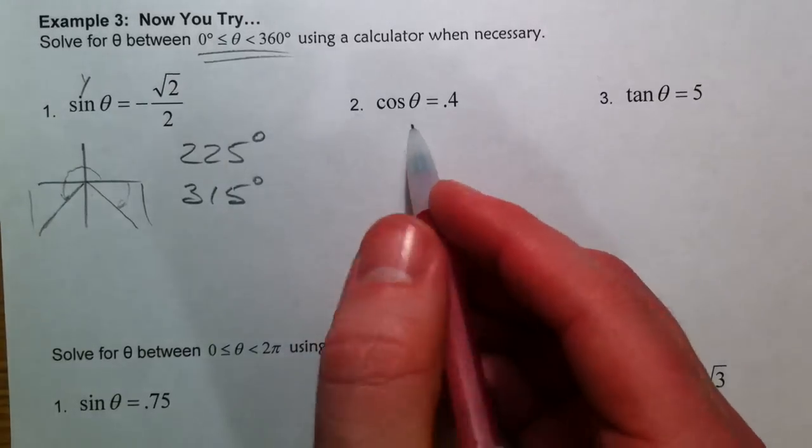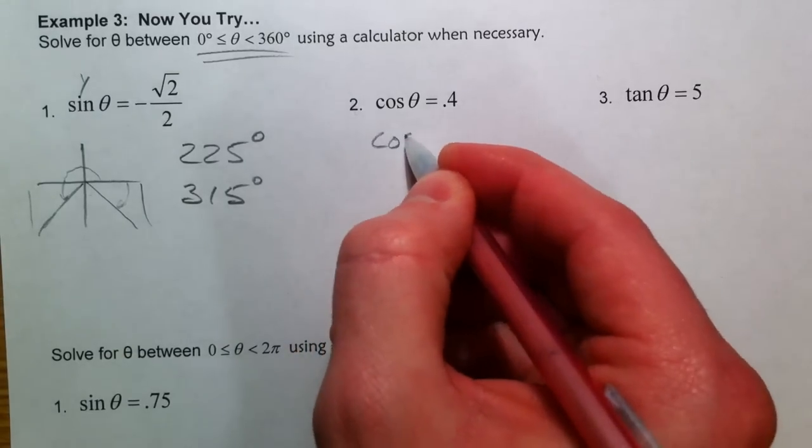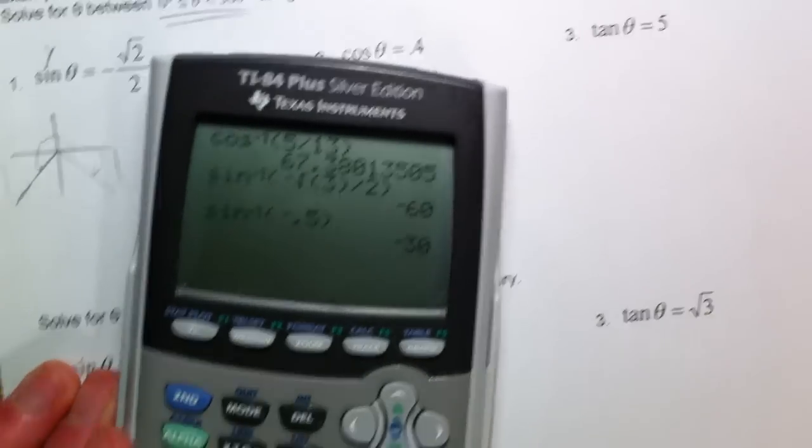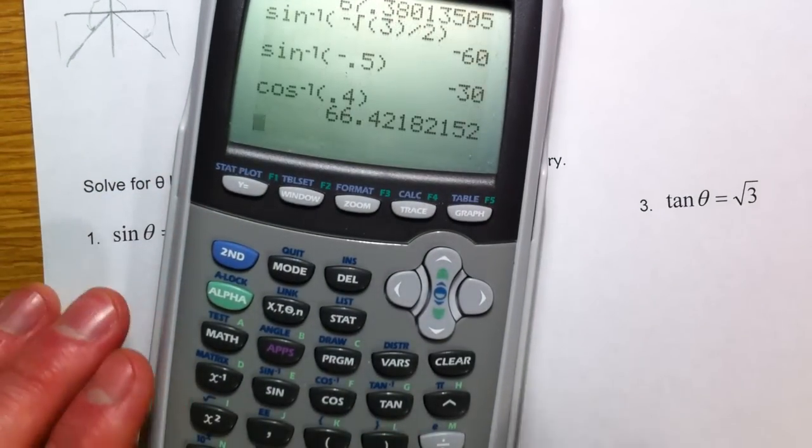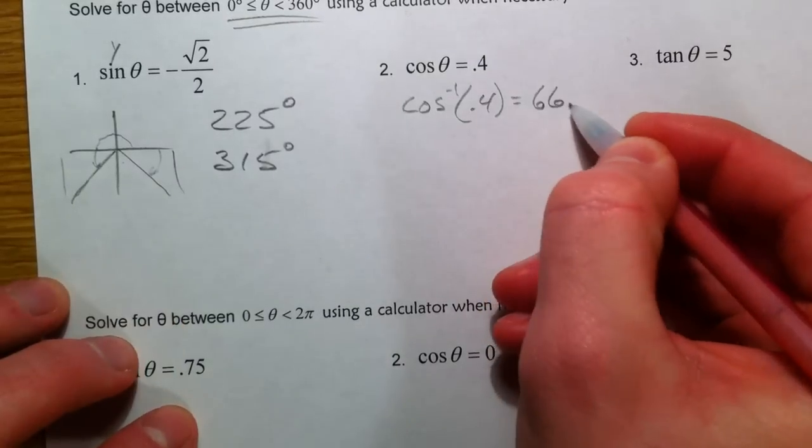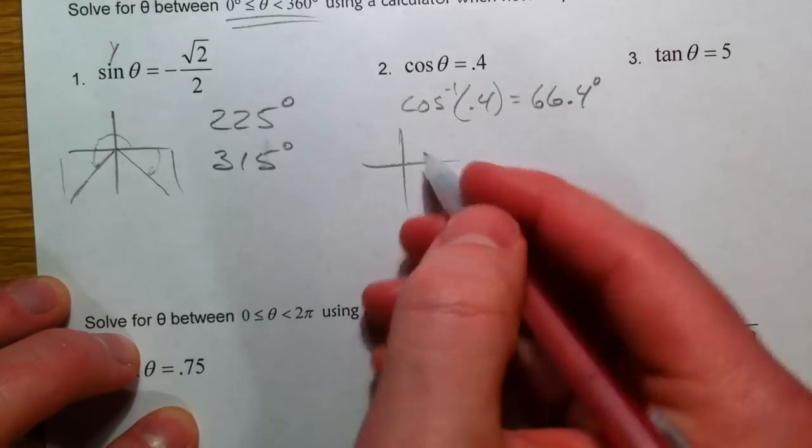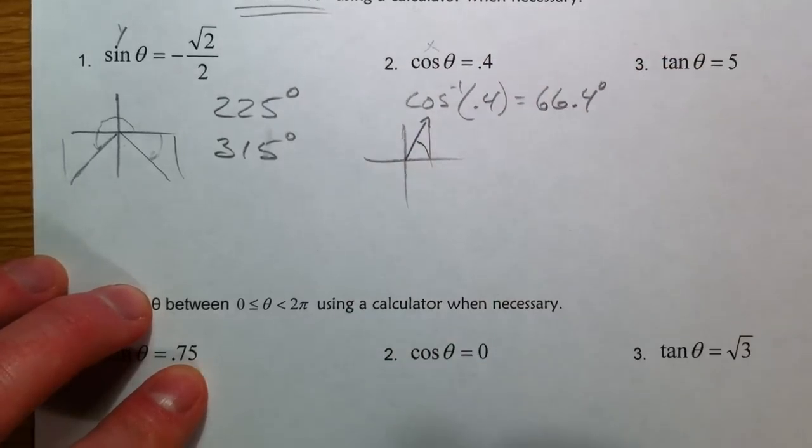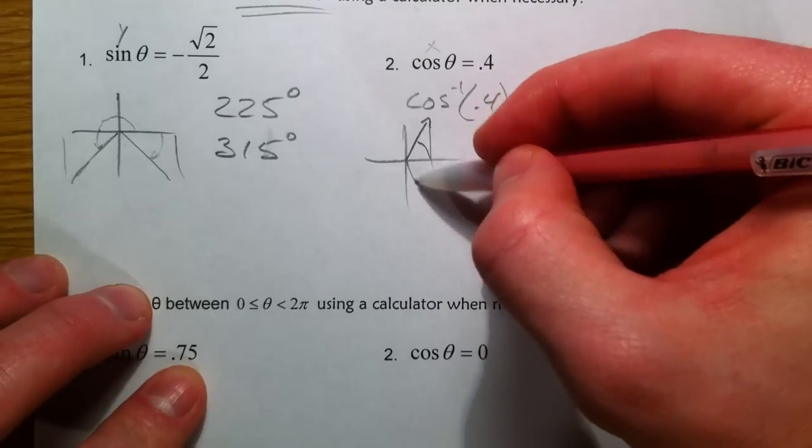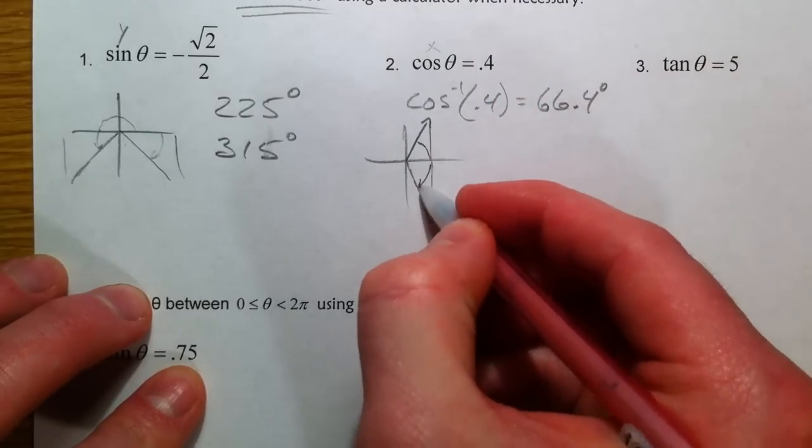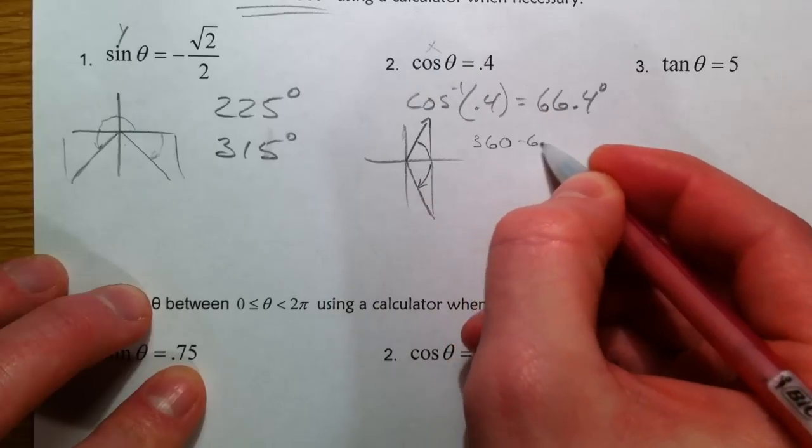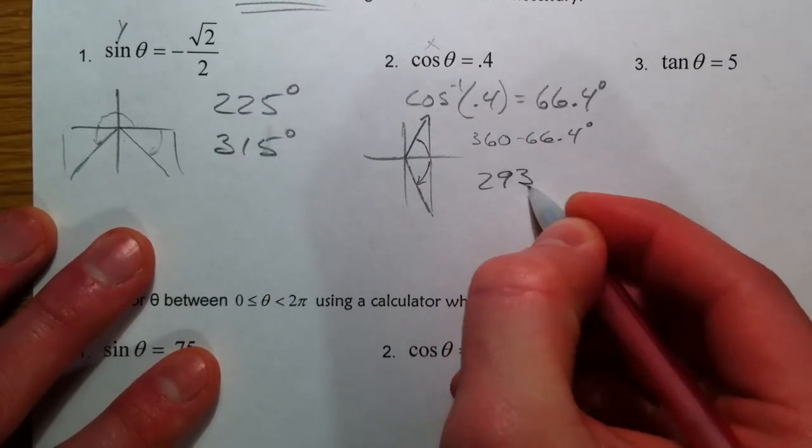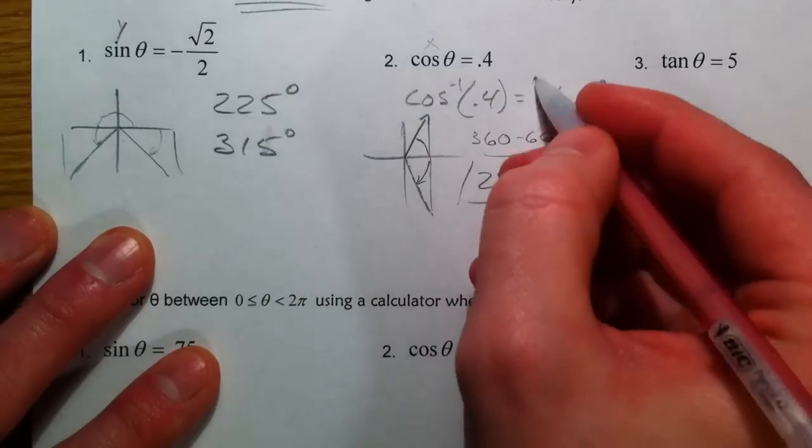So now cosine of 0.4. If you do inverse cosine in the calculator of 0.4, what does the calculator give us? Inverse cosine of 0.4, 66.4 degrees. 66, we're up here. Where else is the x value going to be a positive 0.4? Reflect it down because our x's are positive on the right hand side. So I'm going to do 360 minus 66.4 and get my second angle, 293.6 degrees. Both of those. And so again, we just reflected it.